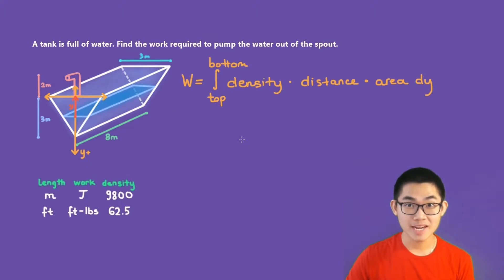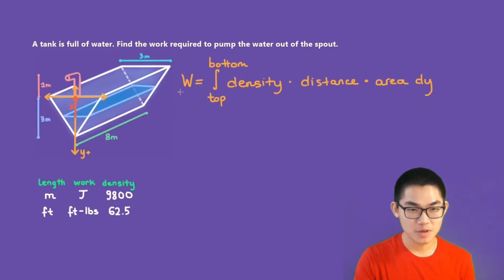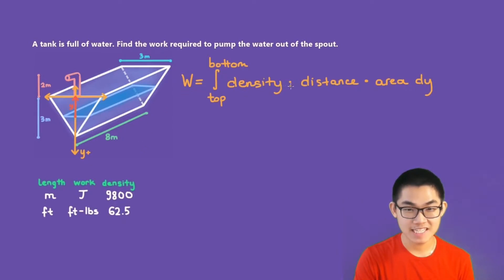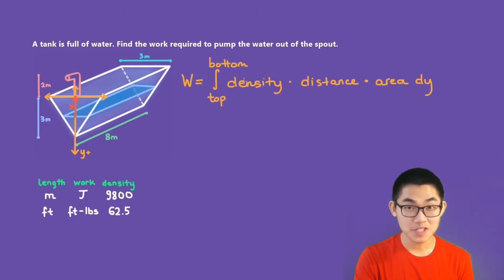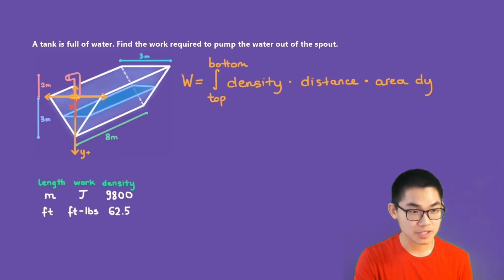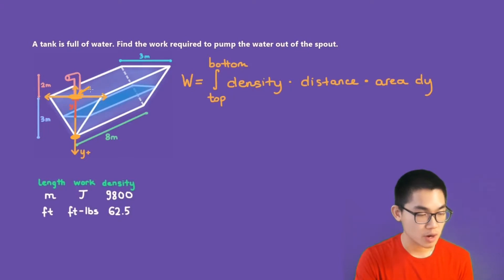The formula to calculate the amount of work to pump the water out of a tank is W equals the integral from the top to the bottom of density times distance times area. The top is the origin, which is 0, and the bottom is 3. So we integrate from 0 to 3.